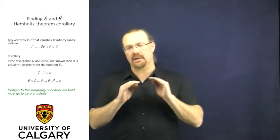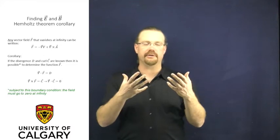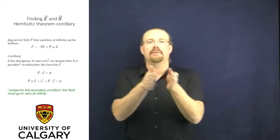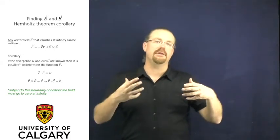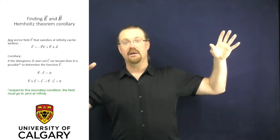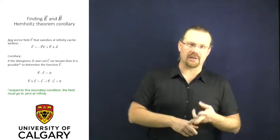What we're going to do now is make an assertion of a corollary. If we know the divergence and the curl of our vector field, that is sufficient to determine what our total vector field is up to some constant. If we further constrain this to say that our vector field must vanish at infinity, then the constant must be zero. So knowing the divergence and knowing the curl is enough to give you what your vector field is.